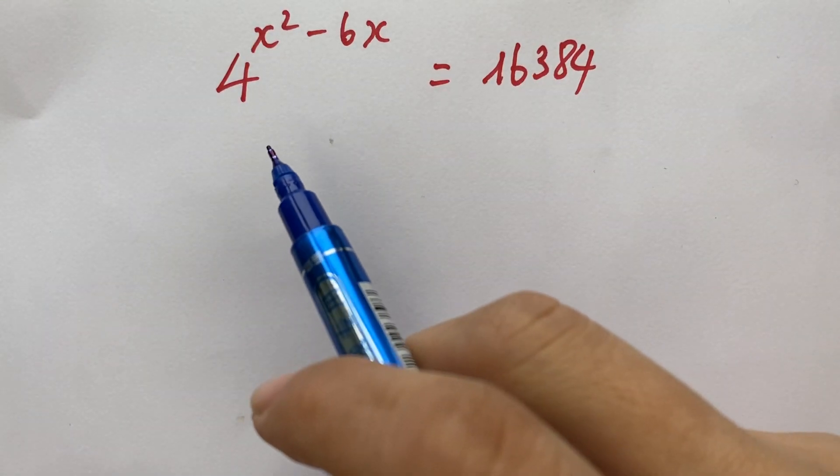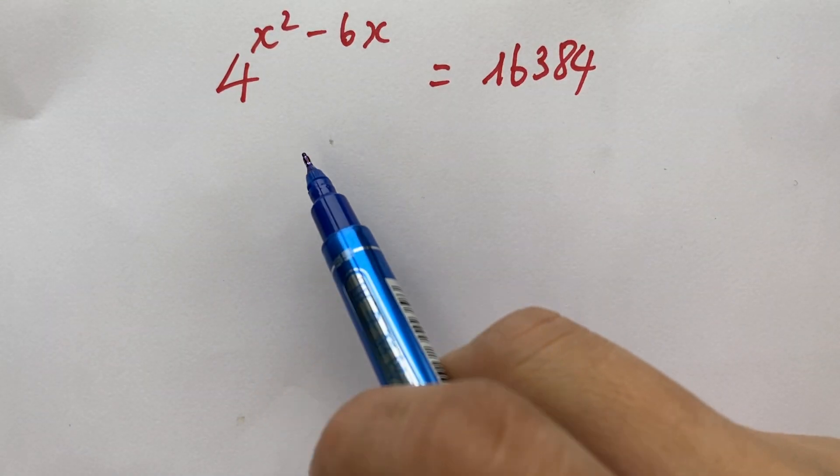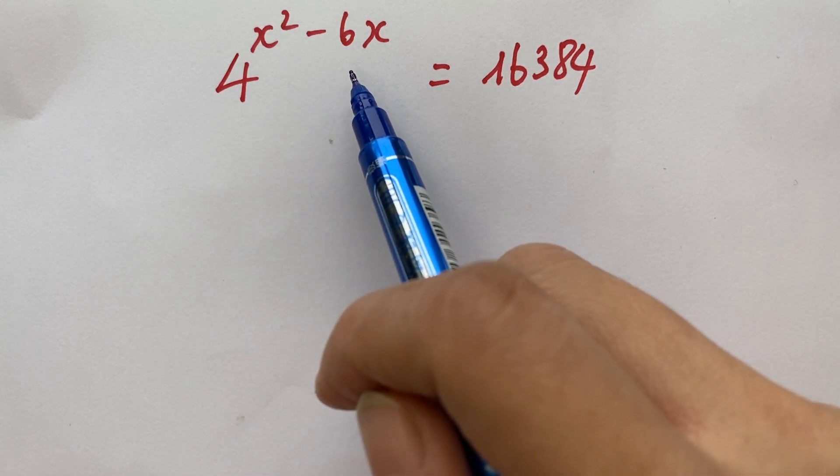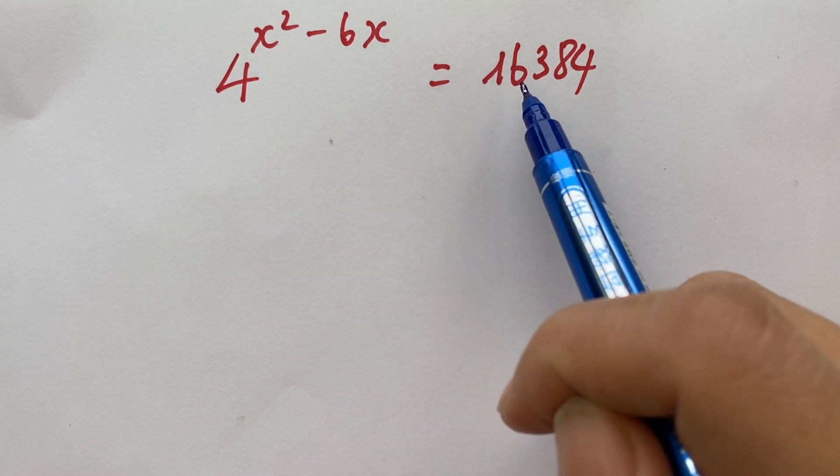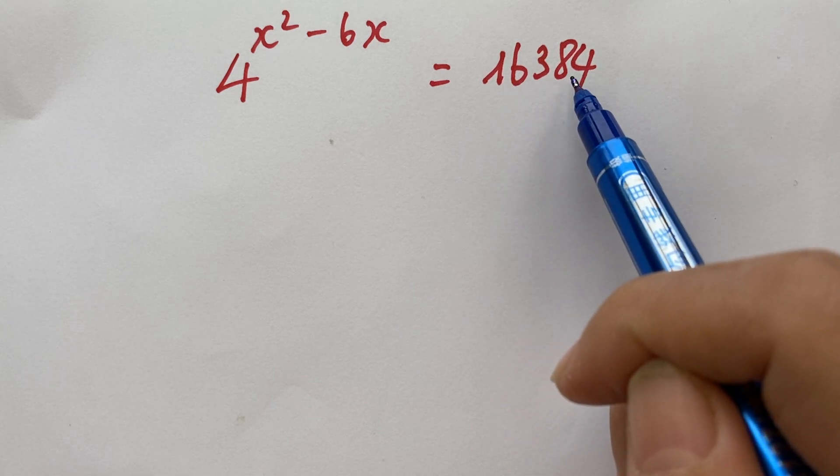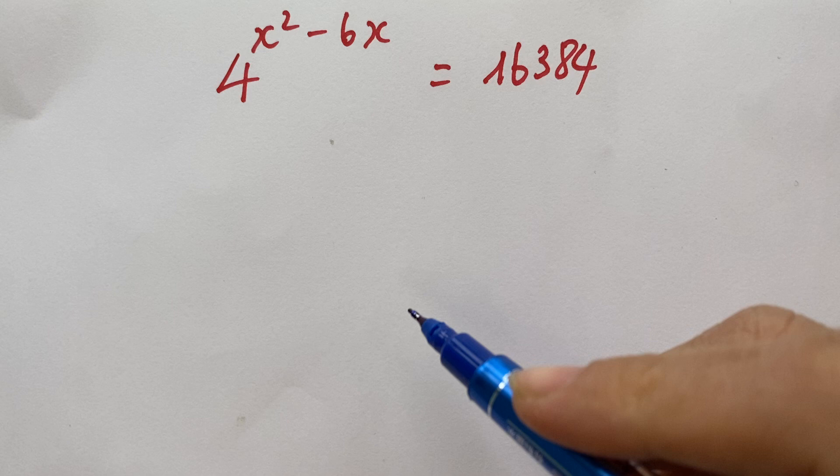Hello everyone, today we can solve the exponential equation 4 power x squared minus 6x equals 16,384.